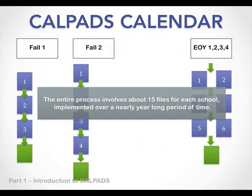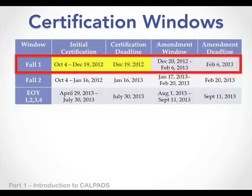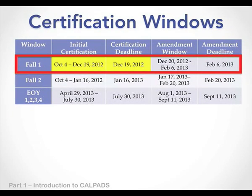The CALPADS calendar is really a year-long process. Fall 1 is followed by Fall 2, which has more to do with staff data and course and section enrollment data, and then the end-of-year process, which doesn't occur until after the school year is over. It's more appropriate to talk about certification windows than deadlines, because even though the Fall 1 certification deadline is usually at the end of December right before winter break, it's not a good idea to wait until the last day. You should start as soon as possible when the window opens to make sure your data is accurate in both your SIS and in CALPADS.